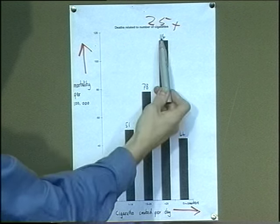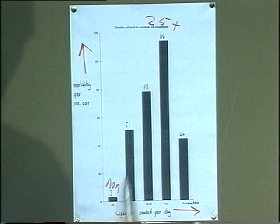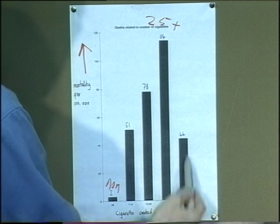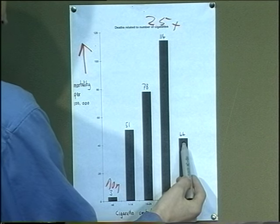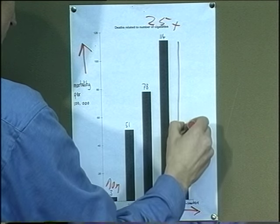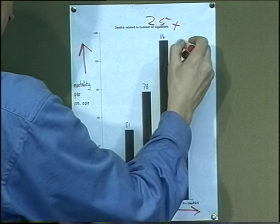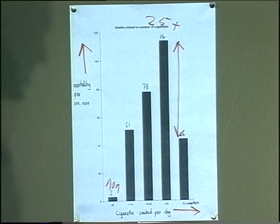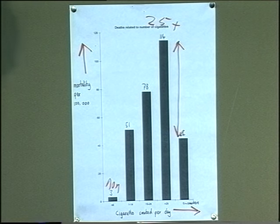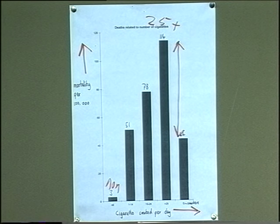And finally, this column here is ex-smokers, and their mortality drops to 44. So there is significant benefit in mortality if your patients stop smoking. There is a definite correlation between the number of cigarettes smoked and the mortality from chronic obstructive airways diseases.